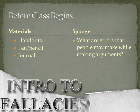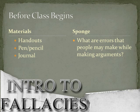Looking at the sponge, what are some common errors that people make when making an argument? Sarah, name one quickly and succinctly. Not enough details to support their statement. Not enough details — absolutely. Being off topic? Being off topic, absolutely.